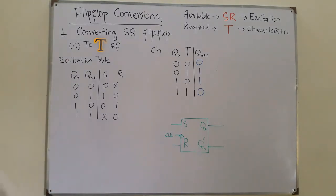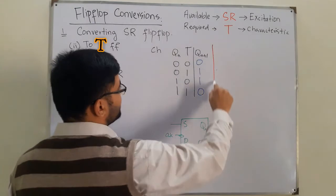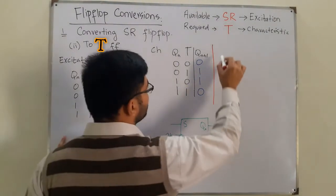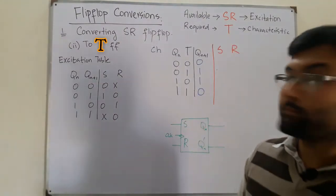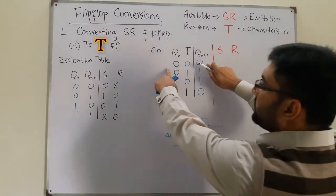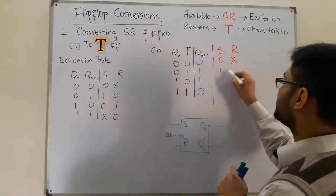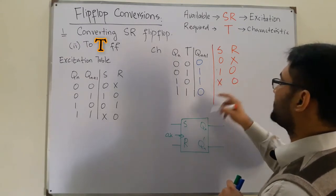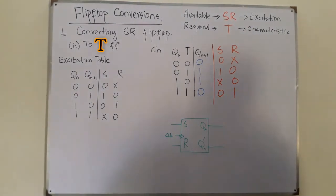The next state values are 0, 1, 1, 0. The next step is to make this a combinational table from the characteristic table. We match Qn and Qn+1 from the characteristic table with the excitation table, giving us S and R values. When 0→0: S=0, R=X. When 0→1: S=1, R=0. When 1→1: S=X, R=0. When 1→0: S=0, R=1. This is the combinational table.